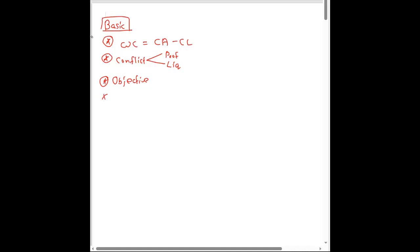There are certain ratios connected with working capital. First is inventory days: inventory days equals inventory value divided by cost of sales, multiplied by 365. Next is receivable days: receivable days equals receivable value divided by credit sales, multiplied by 365. If credit sales are not provided, you can use the complete sales figure.